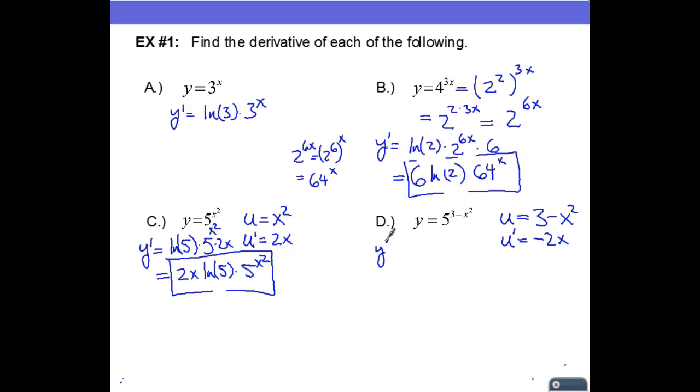And we have y prime equals the natural log of the base, which is five, times five to the three minus x squared, times the derivative of the exponent, which is negative 2x.